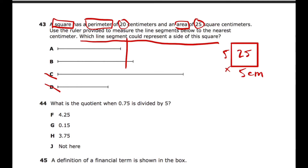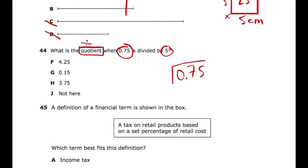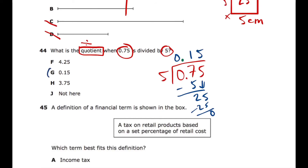Question 44: Find the quotient when 75 hundredths is divided by five. We must set this up correctly: 0.75 divided by 5. When the dividend has a decimal, we move it up to the roof and work with the whole number. How many fives in zero? Zero. How many fives in seven? One — one times five is five, difference of two. Bring down the five: how many fives in 25? Five. Five times five is 25. That gives us our answer.